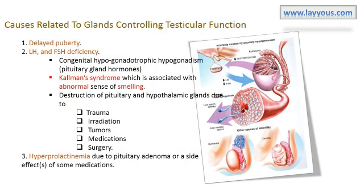Causes related to glands controlling testicular function are of 3 types: 1. Delayed puberty. 2. LH and FSH deficiency — congenital hypogonadotrophic hypogonadism, pituitary gland hormones common syndrome associated with abnormal sense of smelling, and destruction of pituitary and hypothalamic glands due to trauma, irradiation, tumors, medications and surgery. 3. Hyperprolactinemia due to pituitary adenoma or as a side effect of some medications.